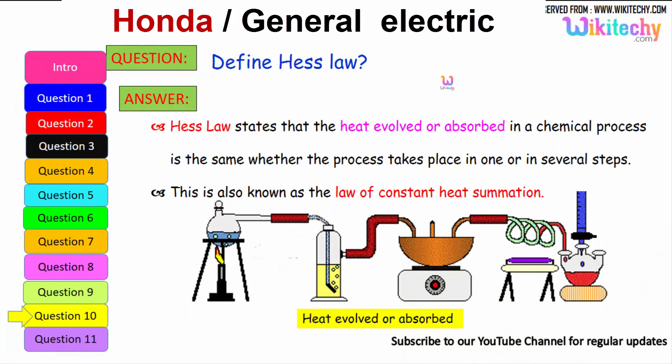Define Hess's Law. This is a very important question. In case of generating heat between an object in emissions, Hess's Law states that the heat evolved or absorbed in a chemical process is the same whether the process takes place in one or in several steps. This is also known as the law of constant heat summation.